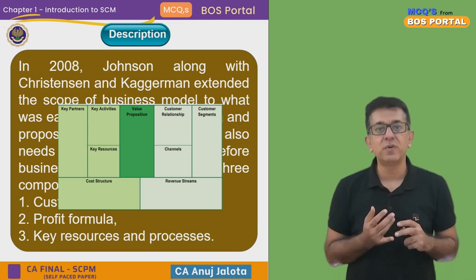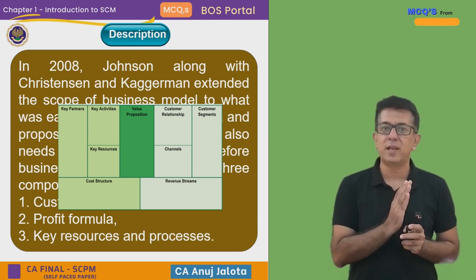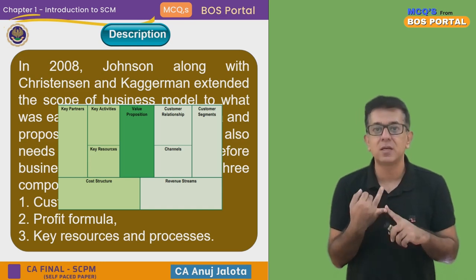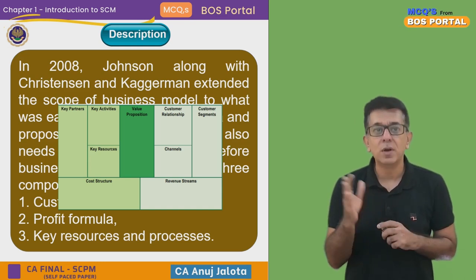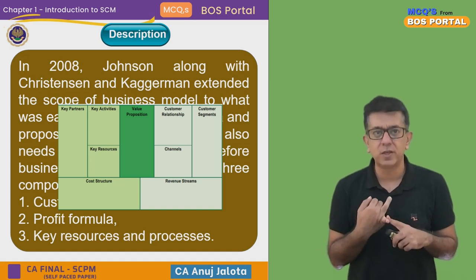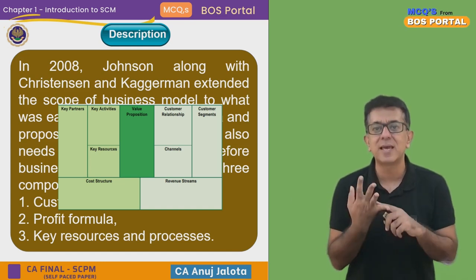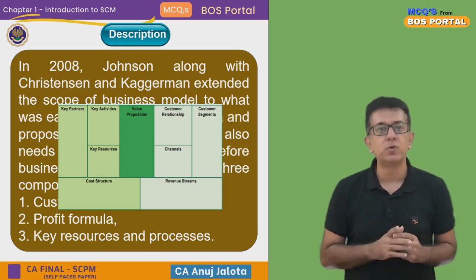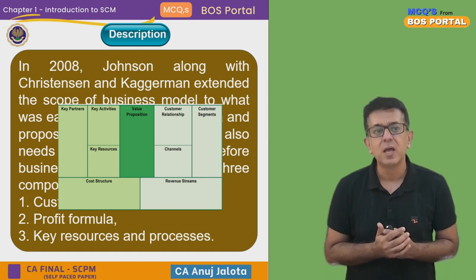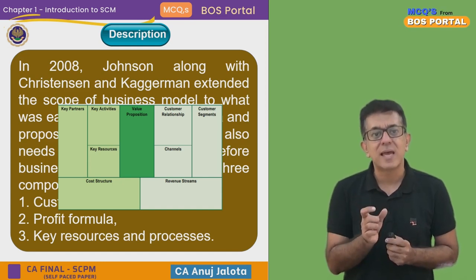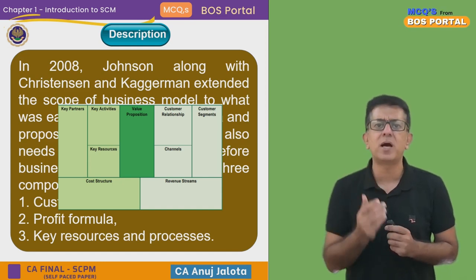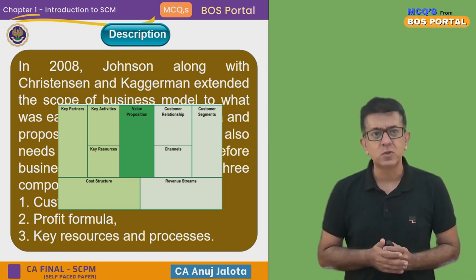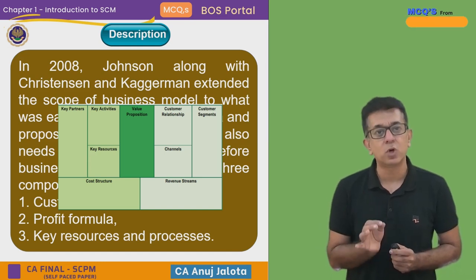The Business Model Canvas has value proposition at the center — four parts on the left and four on the right. On the left-hand side you have internal things: key partners, key activities, key resources, and cost structure. On the right-hand side you have customer relationships, customer segments, channels, and revenue streams. The difference between revenue streams and cost structure gives you the profit. Key resources and processes are clearly part of the Business Model Canvas, so impact factor is not part of the answer.